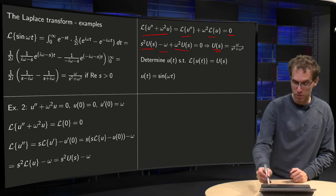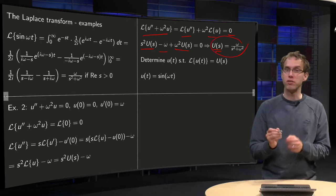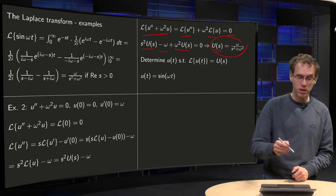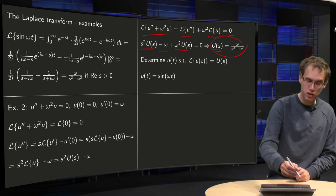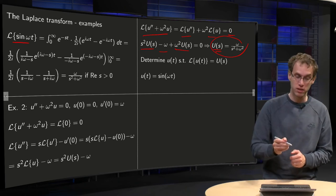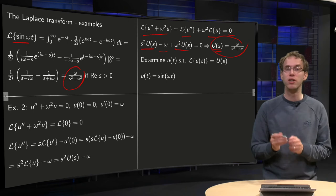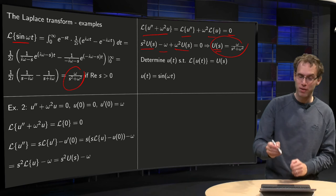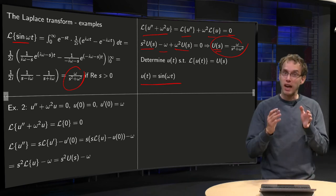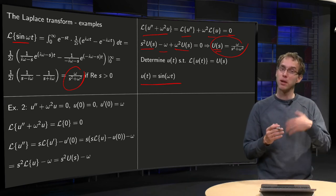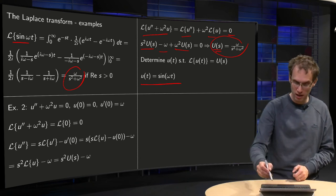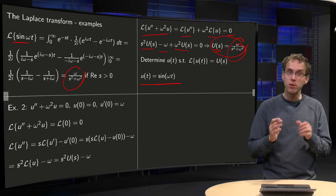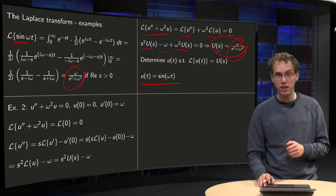We find U(s) = ω / (s² + ω²), and we know the original function — because in our first example we found that the Laplace transform of sin(ωt) is exactly this function. So we can find u(t) immediately: u(t) = sin(ωt). That's how you use the Laplace transform to solve differential equations.